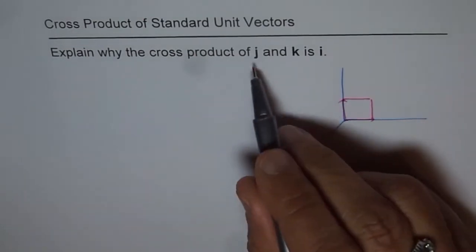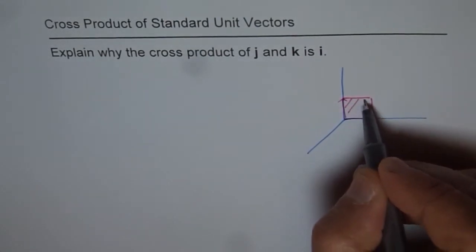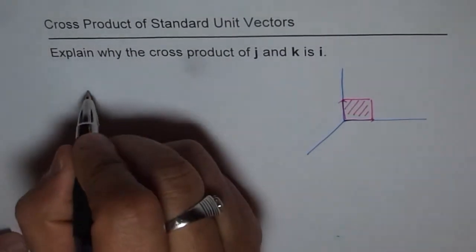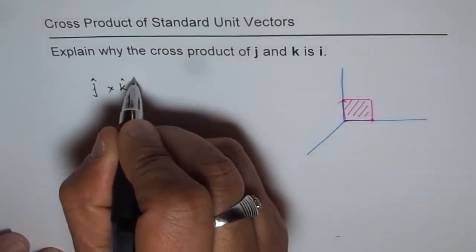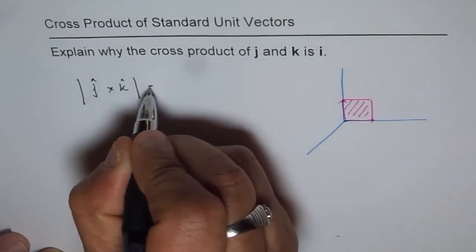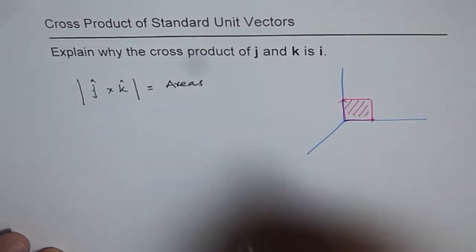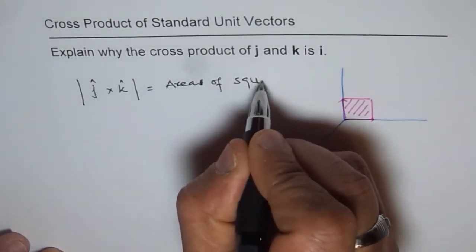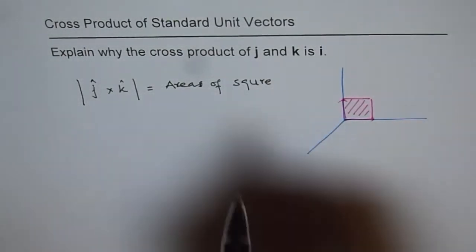And the magnitude of j cross k is area of this square. That's the magnitude. So what we have here is that the magnitude of j cross k is actually equal to area of square. I should say unit squares.